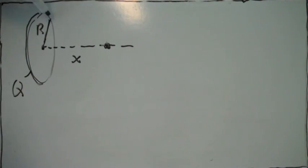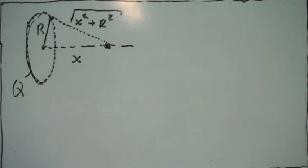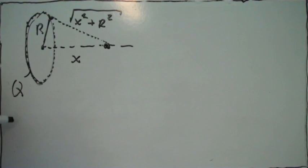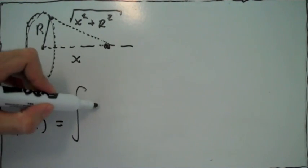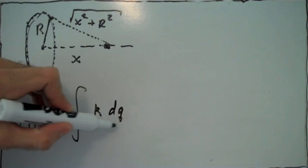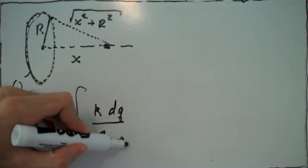If we take up this ring as made up of many point charges, each one of these point charges produces a potential at the point located at x, so the distance from each point charge to x is this distance. That means the total potential that the point charges produce at the point located at x is given by this integral of k times dq divided by square root of x squared plus r squared.